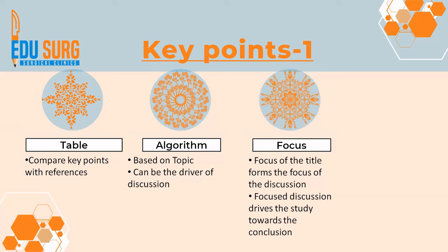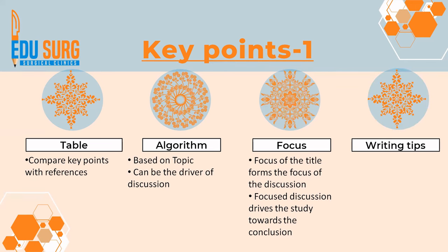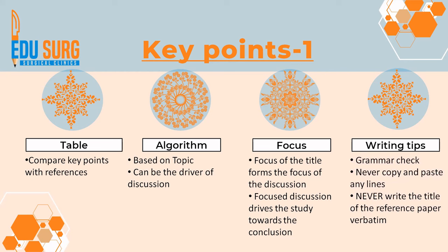The focus of the title will form the focus of the discussion. If your article is on outcome analysis, start with outcomes. If it's on a drug, start with the drug. If it's on how to manage a disease, start with the disease. The title should be very relevant to the discussion, and focused discussion is what drives the study towards the conclusion. Also, it is very important not to have errors in grammar. Never copy and paste any lines from an existing article because that amounts to plagiarism. Never write the title of a reference paper verbatim — more than three or four words in the same sequence as another article is basically plagiarism. Do a grammar check three or four times.